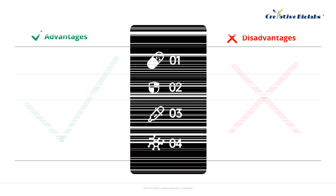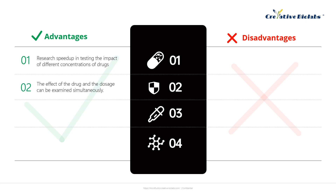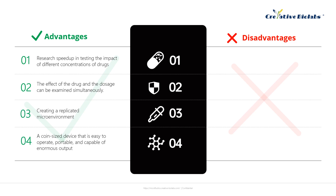OOC has experienced rapid development in recent years, yet akin to a coin, it possesses both advantages and disadvantages. The advantages include acceleration of studies testing the effects of different concentrations of drugs, the ability to check drug effects and dosage simultaneously, the ability to create replicated microenvironments, and a coin-sized device that is easy to operate, portable, and has huge output capacity.